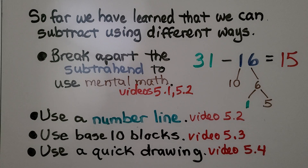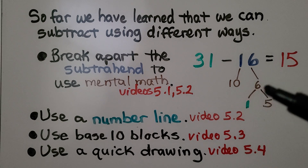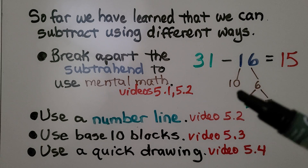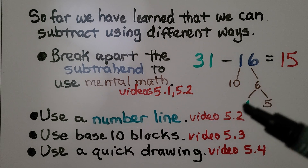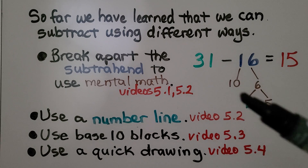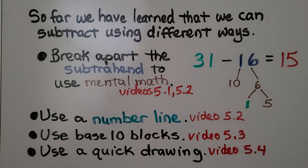So far we've learned that we can subtract using different ways. We can break apart the subtrahend to use mental math — we learned that in videos 5.1 and 5.2. We break the 16 into a 10 and a 6, and use mental math to take 10 away from 31. That's 21. We break the 6 into a 1 and a 5. We take away the 1, now we're at 20. We take away the 5, we're at 15. We also learned to use a number line, base-10 blocks, and a quick drawing to model the problem.